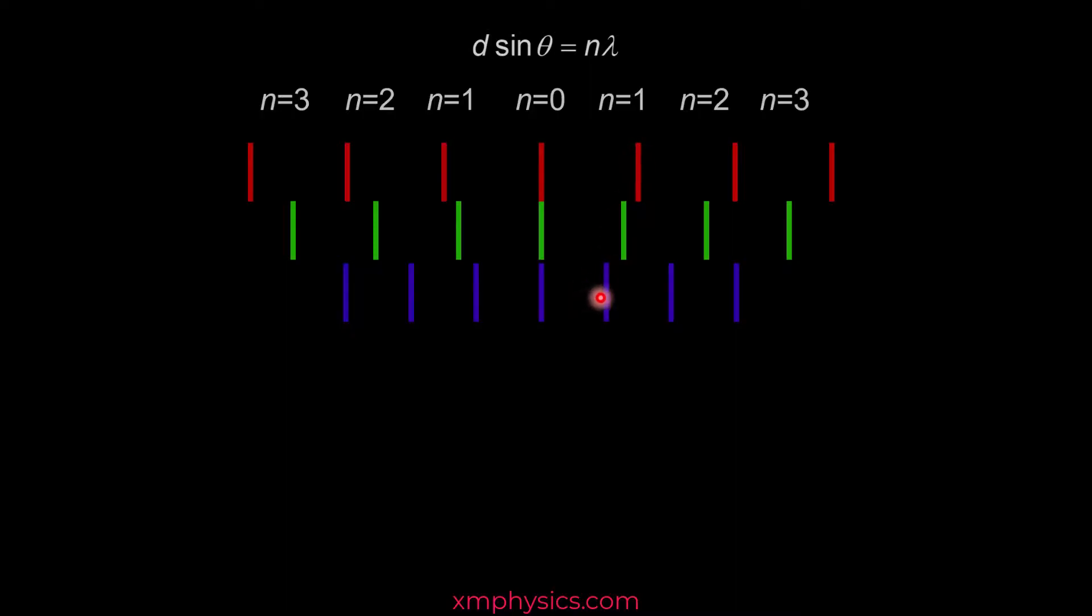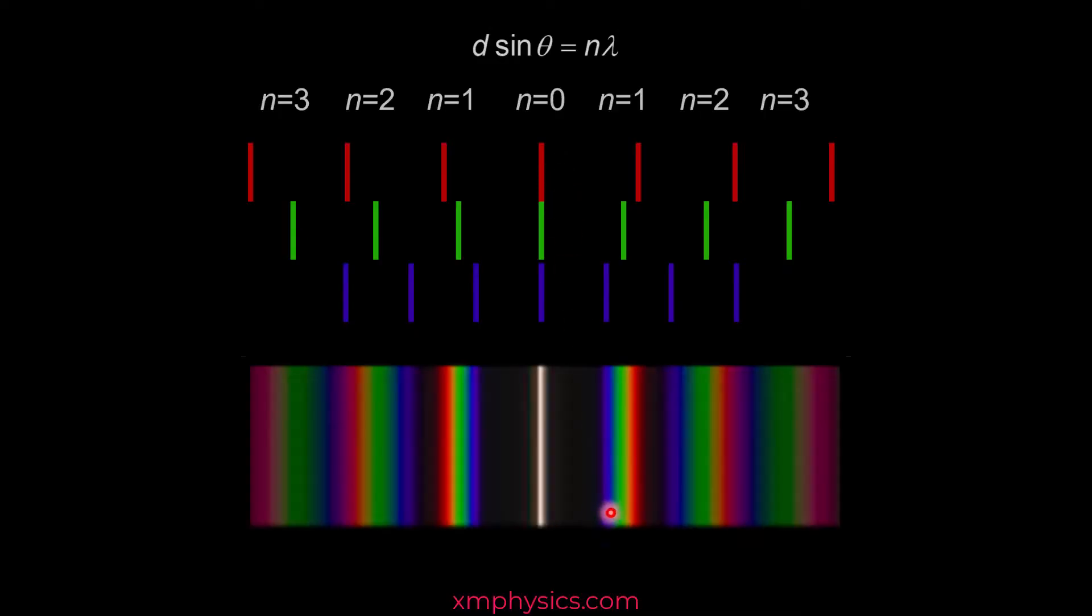If you're using white lights, of course, we have the entire spectrum from the most blue to the most red. And the result will look something like this. So right at the middle, you have the zeroth order white fringe. Because all the wavelengths will still form that zeroth order bright fringe here at theta equals zero.